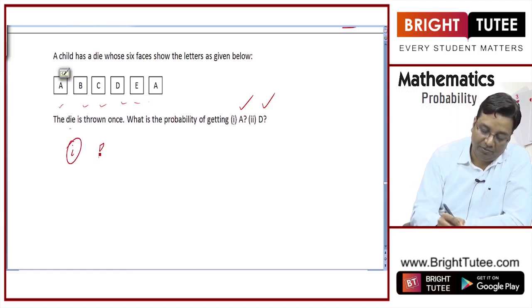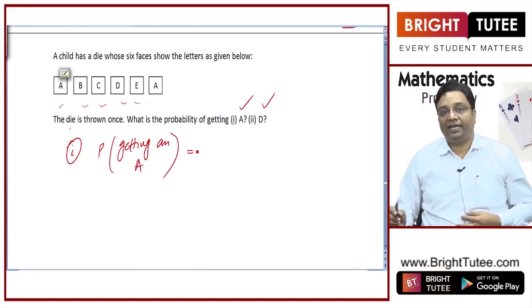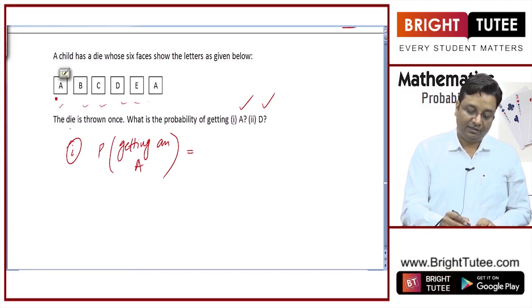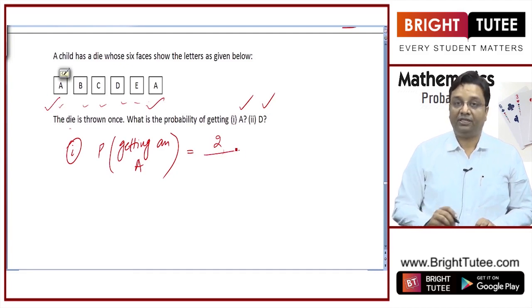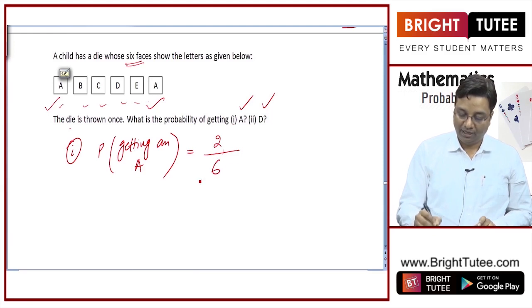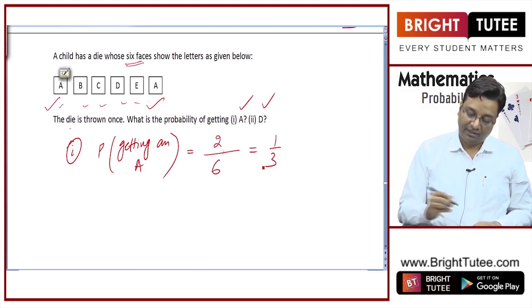First part: probability of getting an A. When we are talking about A, what are the number of favorable cases? This is a favorable case, this is a favorable case. So two cases are favorable to us. The total number of outcomes is 6. So 2 by 6 is the probability of getting an A, that is 1 by 3.